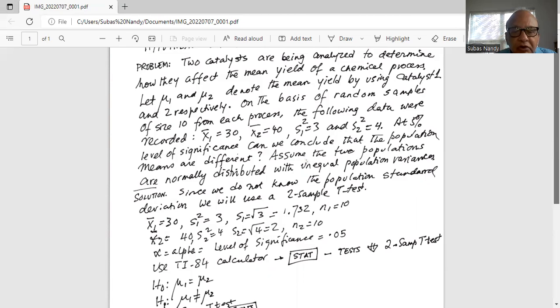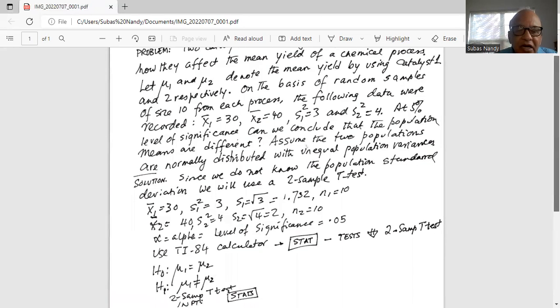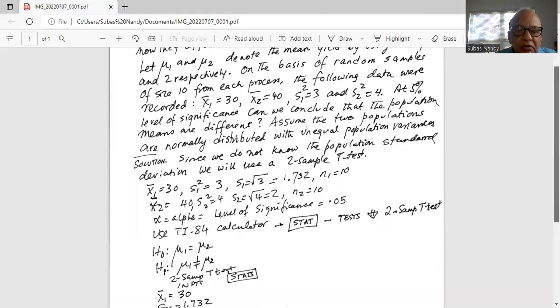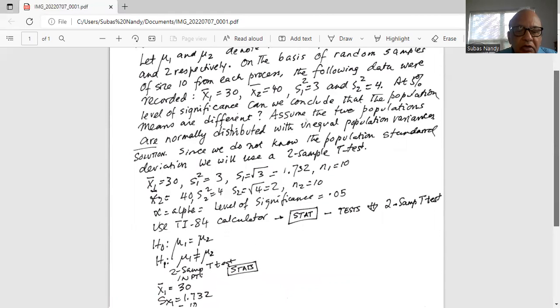Use TI-84 calculator. So we press the stat, then highlight test in the top row, then scroll down to two sample t-test. Our null hypothesis is mu1 equal to mu2, alternate mu1 not equal to mu2.